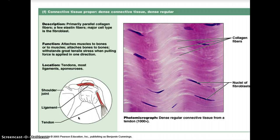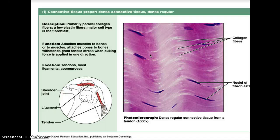Dense regular connective tissue has primarily parallel collagen fibers, some elastic fibers, and the major cell type is the fibroblast. It attaches muscles to bones or to muscles, attaches bones to bones, and withstands great tensile strength when pulling force is applied in one direction. The location of dense regular connective tissue includes tendons, most ligaments, and aponeuroses. An aponeurosis is the join between muscle to muscle, while ligaments connect bones to bones.